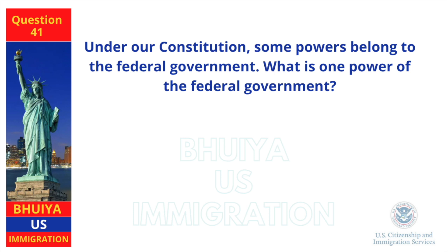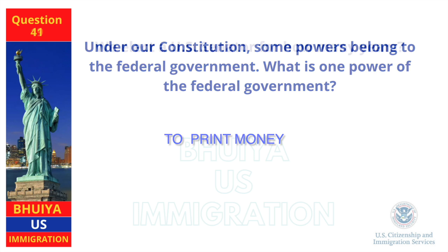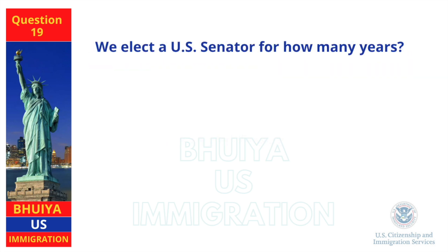Under our Constitution, some powers belong to the federal government. What is one power of the federal government? To print money. We elect a U.S. senator for how many years? Six.